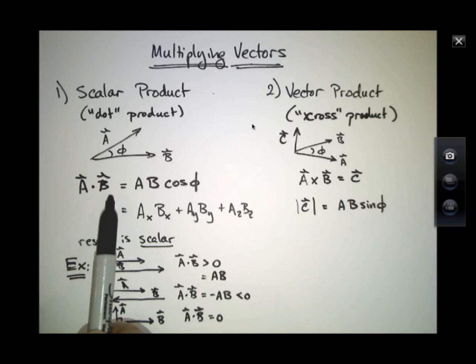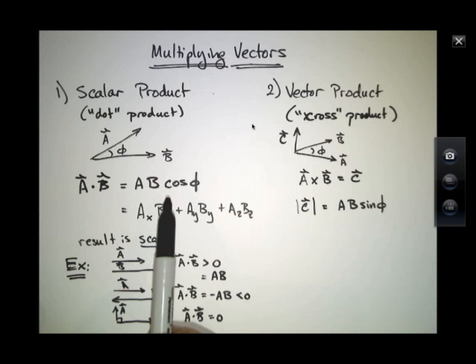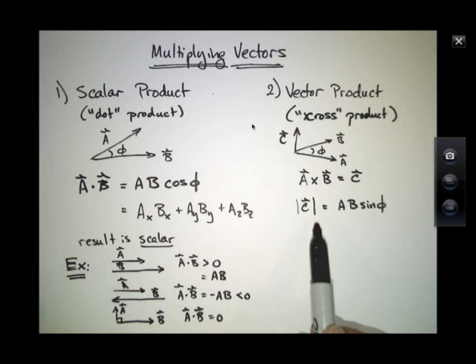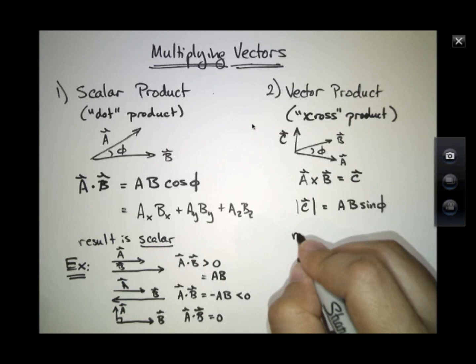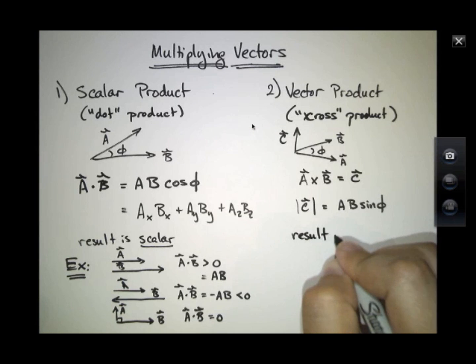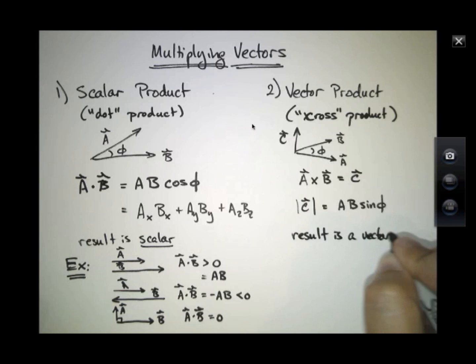So while the dot product is a measure of how well aligned two vectors are, because there's a cosine here and it becomes large whenever the two vectors are in the same direction, this cross product becomes large when the two vectors are perpendicular.